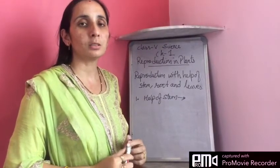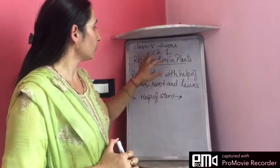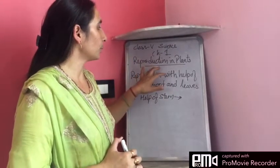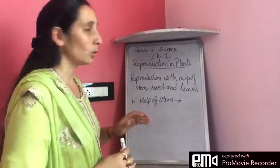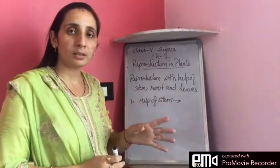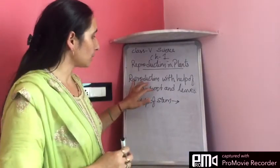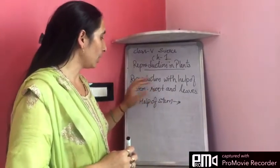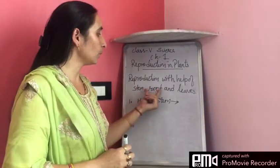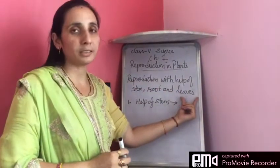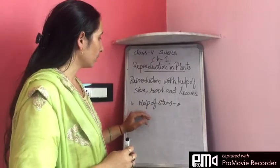Good morning students. In continuation with Chapter 1, Reproduction in Plants, today we will study that not all plants reproduce from their seeds. Sometimes reproduction occurs with the help of stem, roots, and leaves. Let us first start with reproduction with the help of stem.